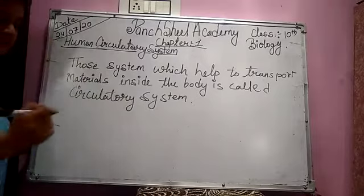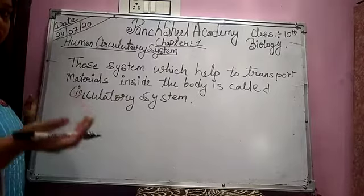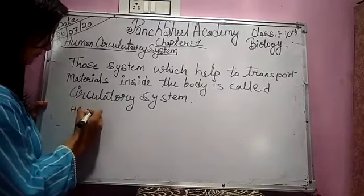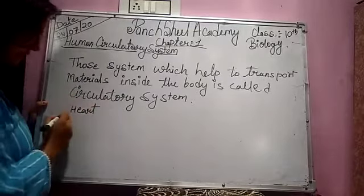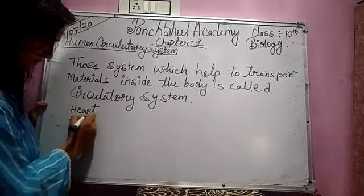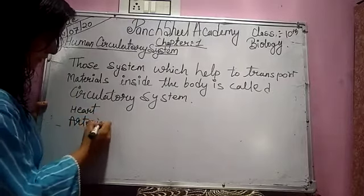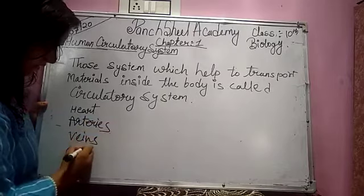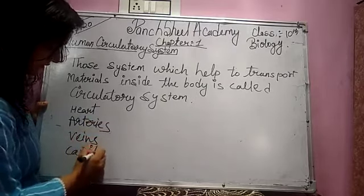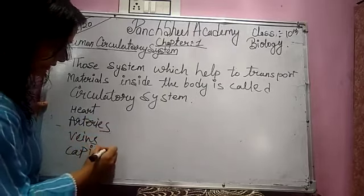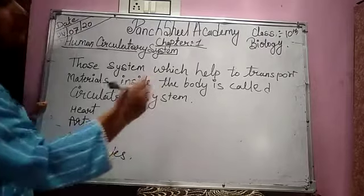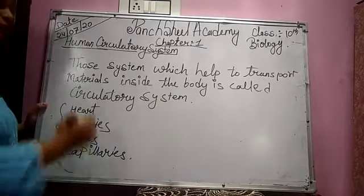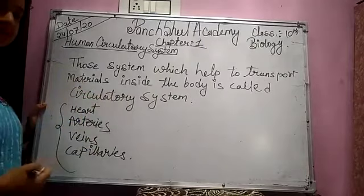The circulatory system mainly consists of: heart, arteries, veins, and capillaries. These are the main organs of the circulatory system.